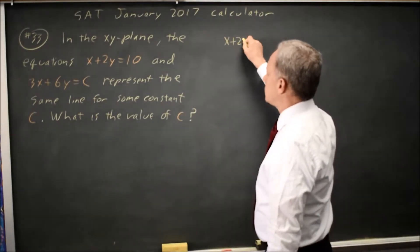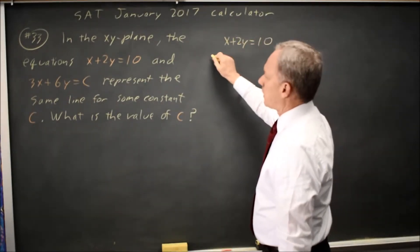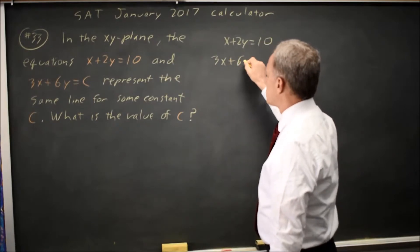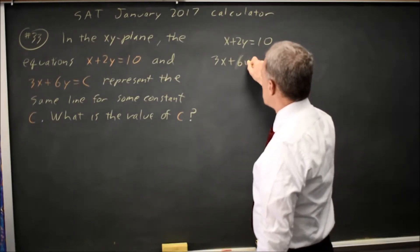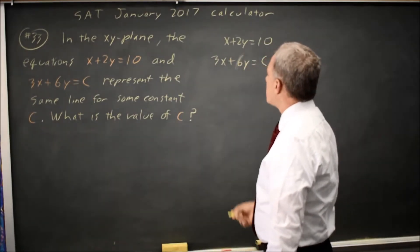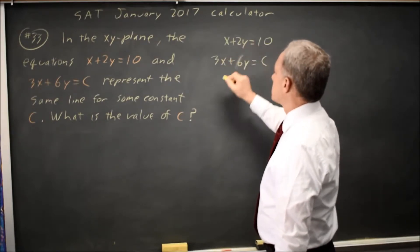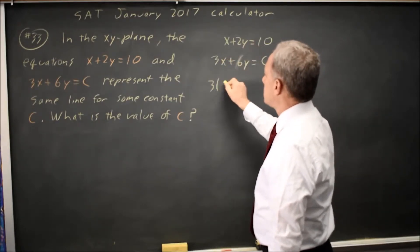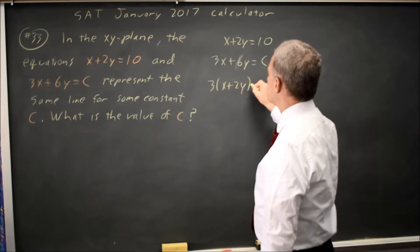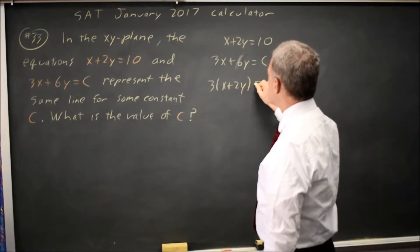So I have x plus 2y equals 10, and 3x plus 6y equals C. I notice that 3x plus 6y is 3 times x plus 2y, so 3 times x plus 2y equals C.